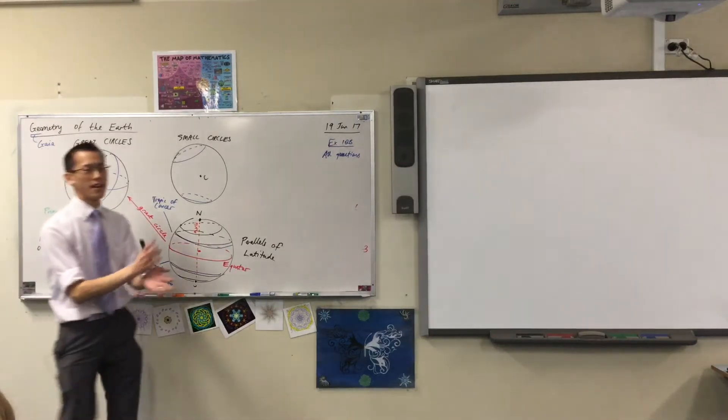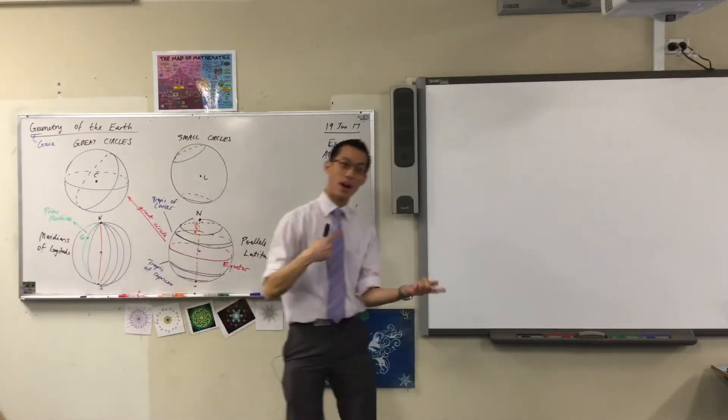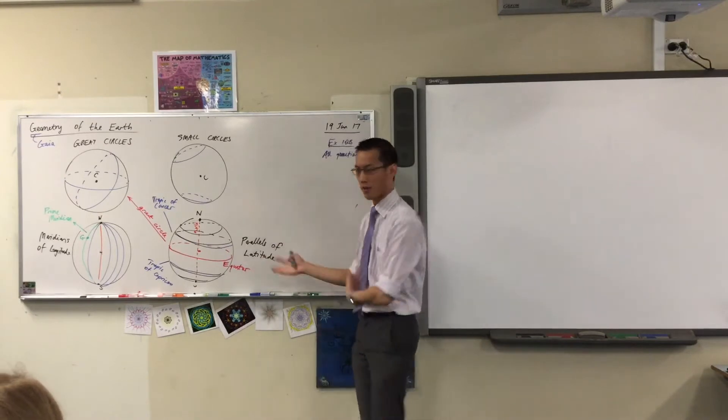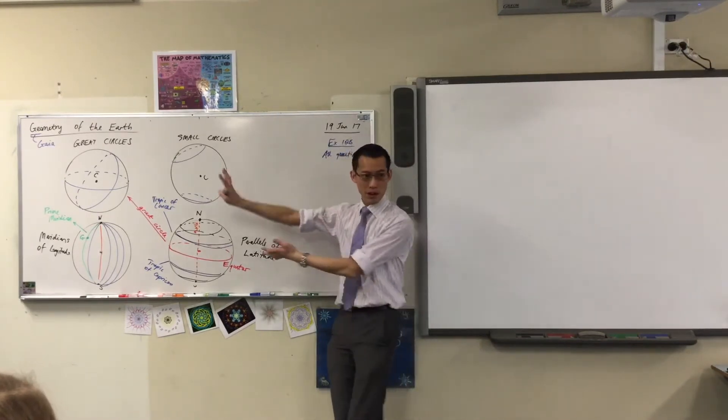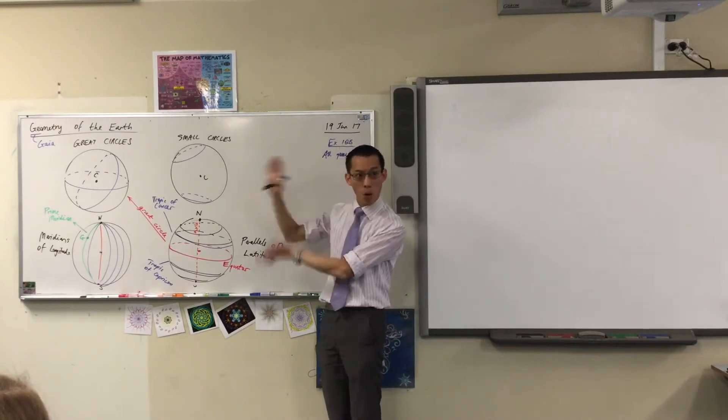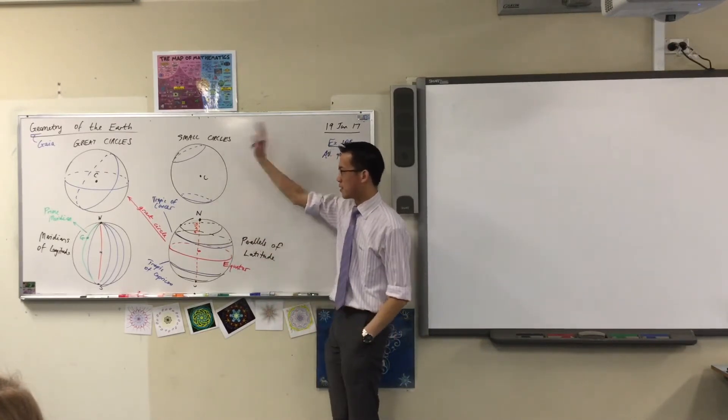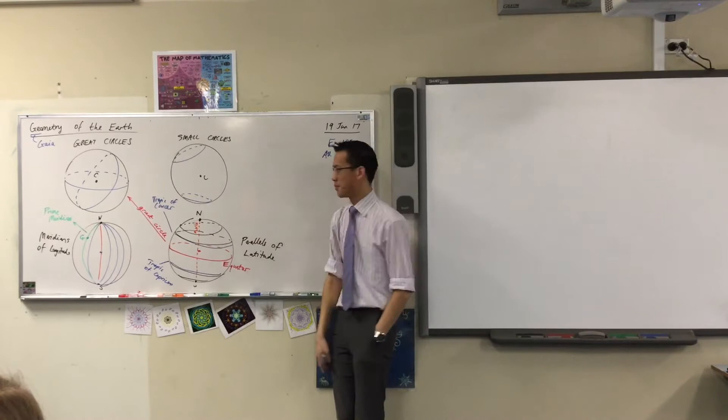There are a bunch of questions about how many great circles or how many small circles you can draw through a given point here or there. So what I want to try to do is appeal back to the diagrams you've already drawn. I'm going to mess these all up because you don't need them anymore, you've already copied them.